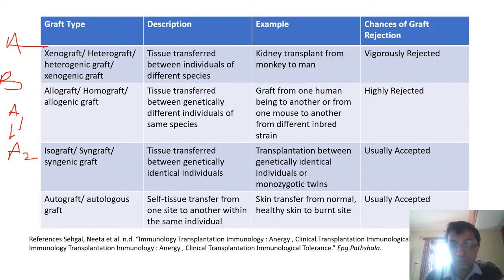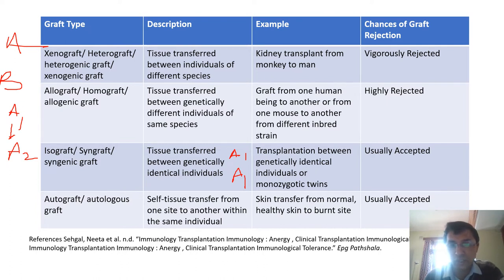The third type is isograft or syngraft. This involves genetically identical individuals — for example, A1 and A1. Both individuals are the same species and genetically identical, such as monozygotic twins. This type of graft is usually accepted.